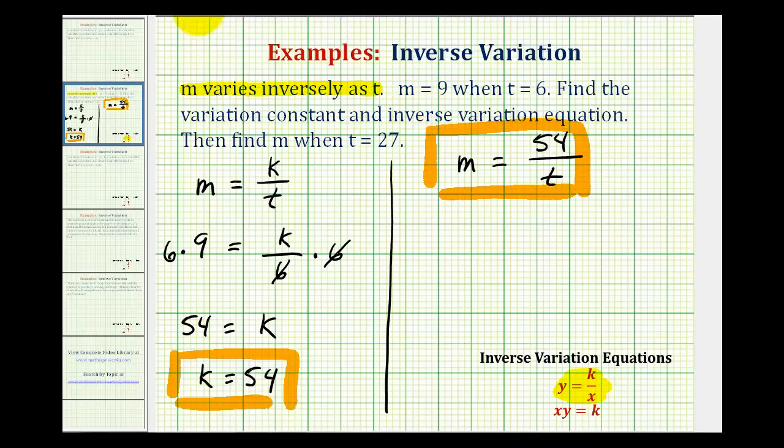And then for the last part, we're asked to find m when t equals 27. So we'll substitute 27 for t and solve for m. So we'd have m equals 54 divided by 27, which is equal to two. So m is equal to two when y equals 27.